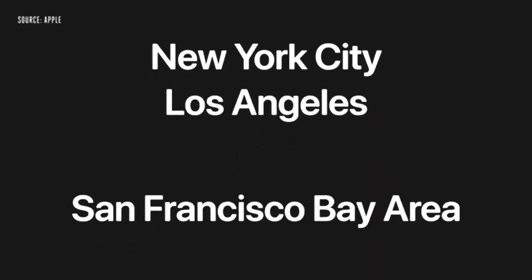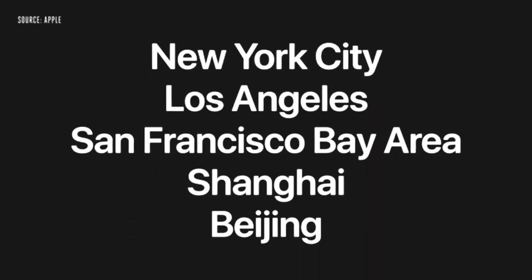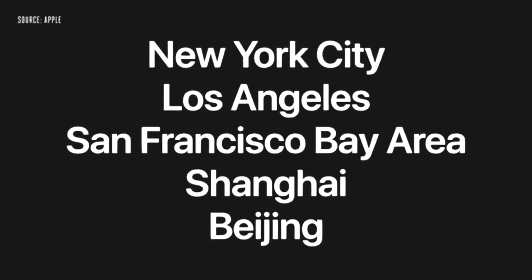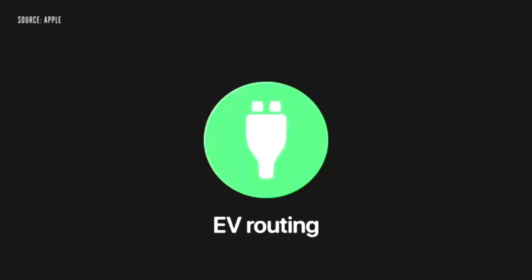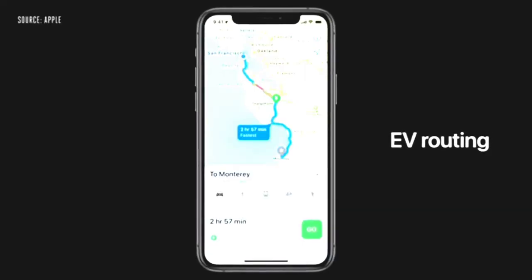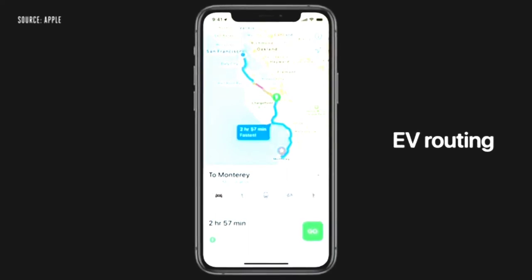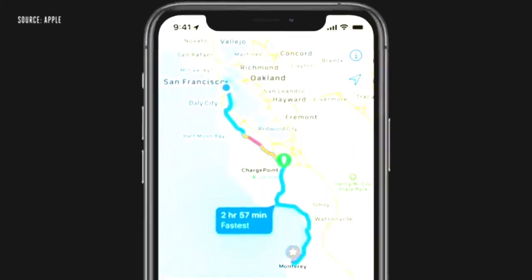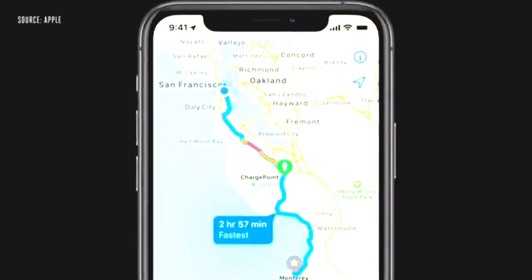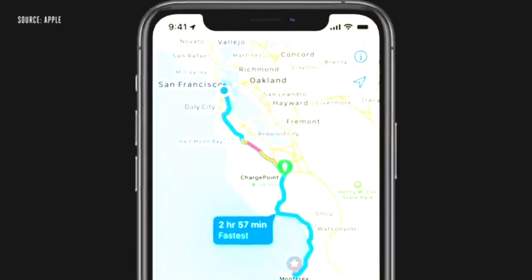With iOS 14, we're bringing cycling to New York City, LA, the San Francisco Bay Area, along with a number of cities in China like Shanghai and Beijing. We're also introducing EV routing. Maps will track your current charge and factor in things like elevation and weather to automatically add charging stops along your route.